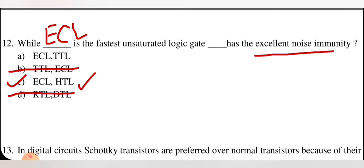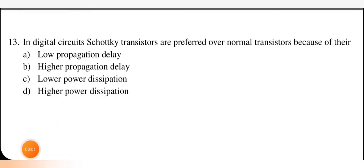In digital circuits, Schottky transistors are preferred over normal transistors because of their low propagation delay. Schottky transistors have high speed, meaning low propagation delay. So option A is correct for this.